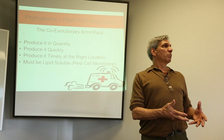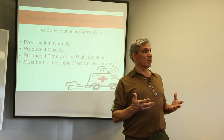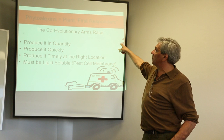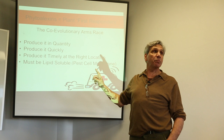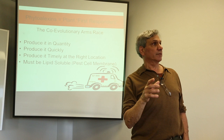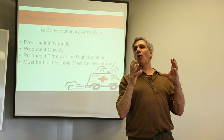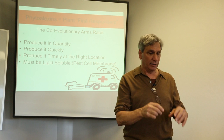The co-evolutionary arms race: phytoalexins must be produced in quantity, quickly, at the right location, and they must be fat-soluble — because the pest cell membrane is what you're targeting. Remember that diagram showing all the sites on the pest cell membrane — it's a fat-soluble membrane, so the plant's defense compound must also be fat-soluble to penetrate and affect it.